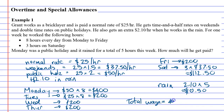So his total wage is: $400 on Monday, plus four lots of $200 for Tuesday to Friday, plus $112.50 on Saturday, plus $10.50 for the rain. When we add all these up together we get $1,323 dollars total.